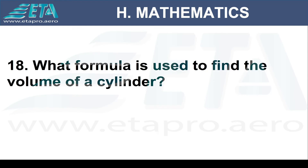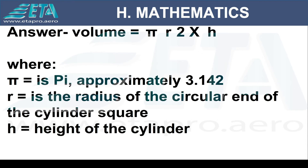What formula is used to find the volume of a cylinder? Volume equals pi (approximately 3.142) times radius squared times the height of the cylinder.